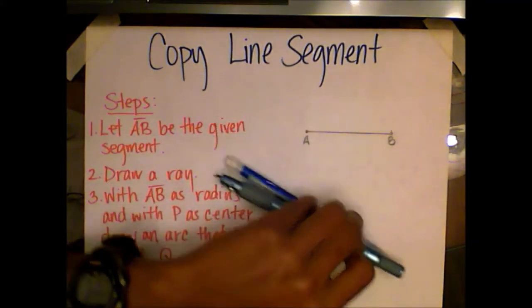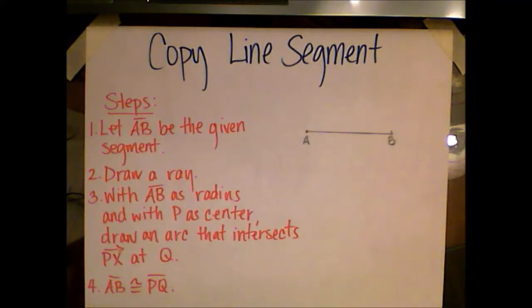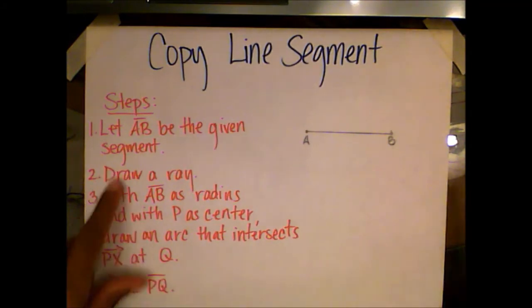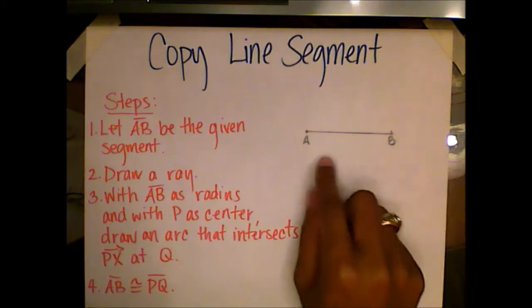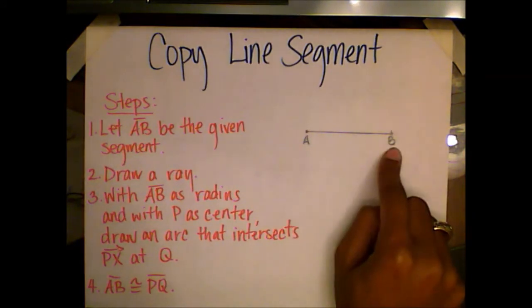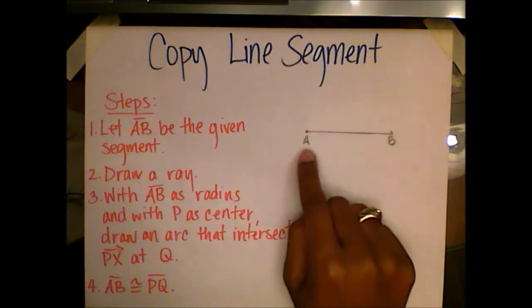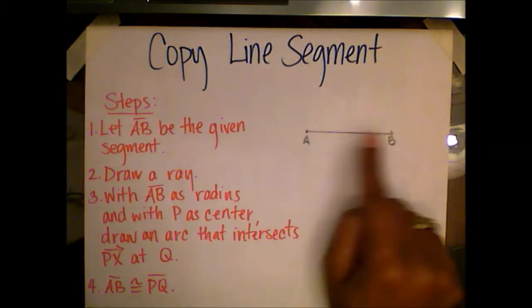Now to copy a line segment, we have four easy steps. Step one, let line segment AB be the given line segment. You'll notice I have line segment AB, and it's a line segment because I have definite endpoints that we have named point A and point B.